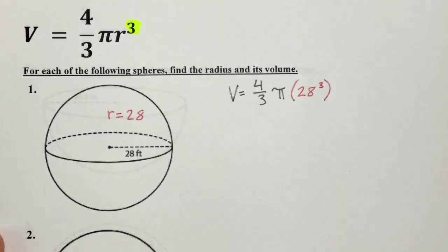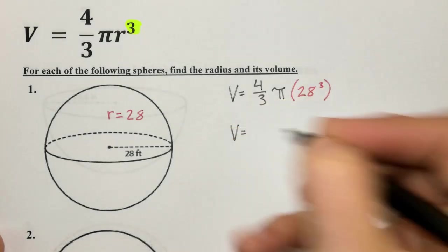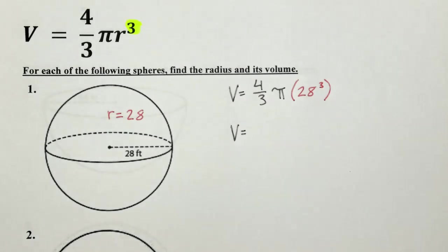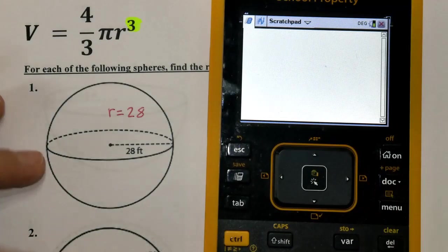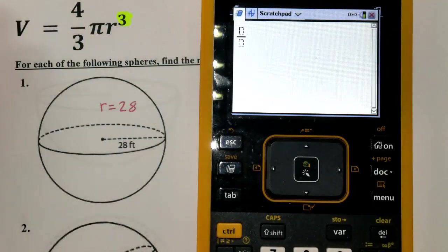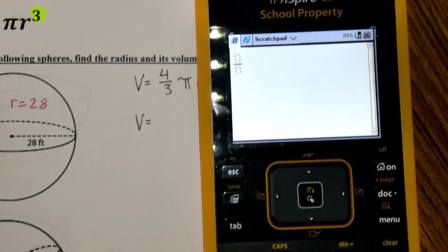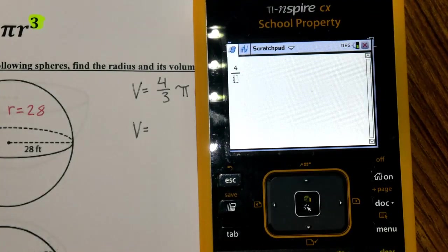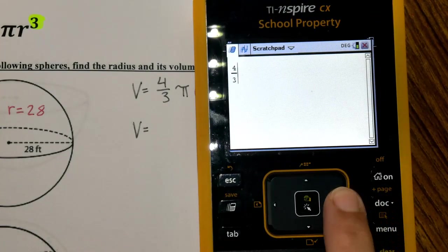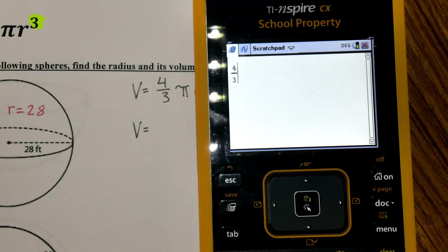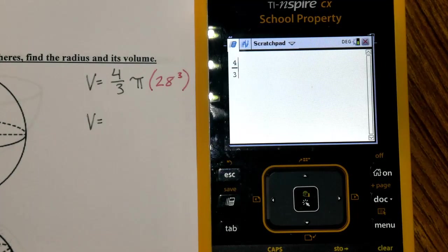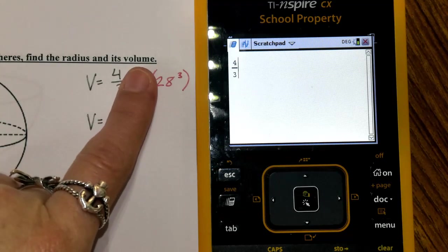In terms of pi means you put everything into the calculator except the pi symbol. With our school calculators, press the ctrl-divide button to get the fraction function, type 4 on top and 3 on the bottom. Then scroll right to get out of the fraction, and enter 28 cubed — leaving pi out for now.